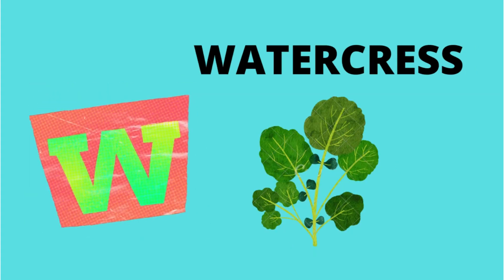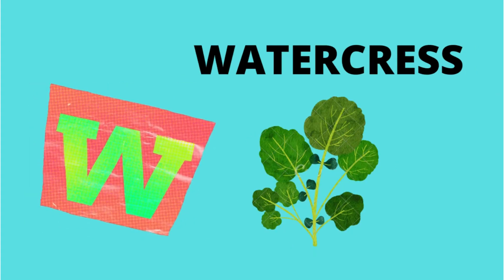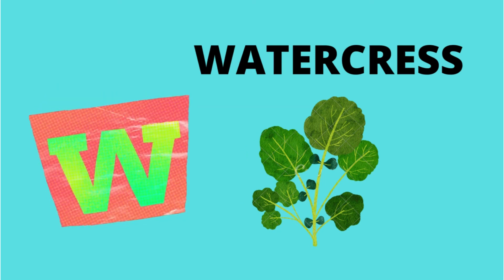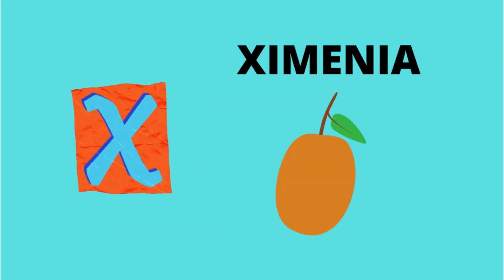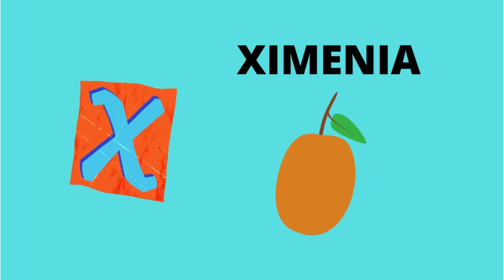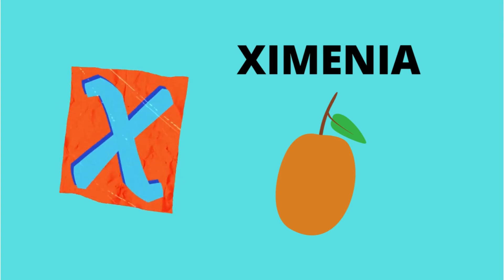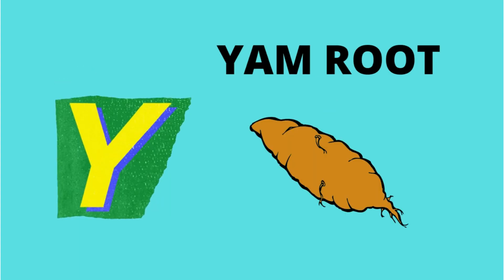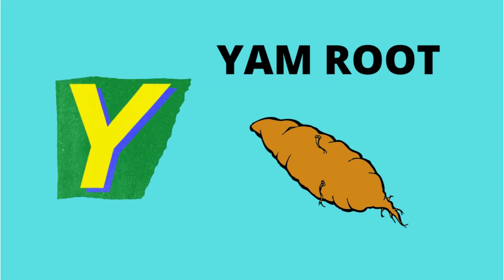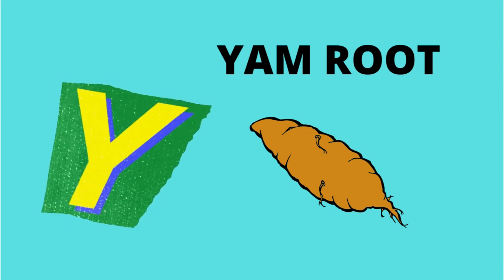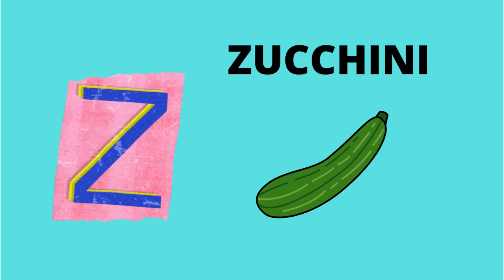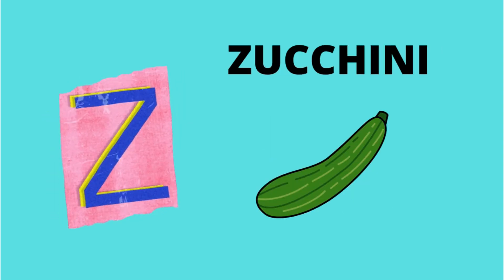W. W is for Watercress. Watercress. X. X is for Ximenia. Y. Y is for Yam root. Z. Z is for Zucchini. Zucchini.